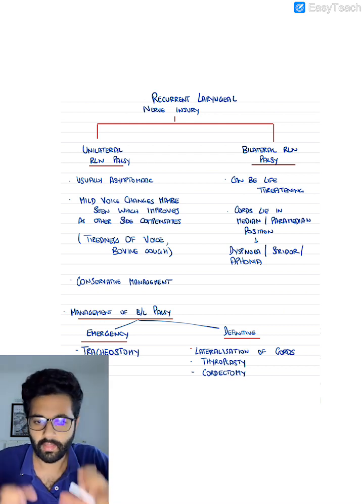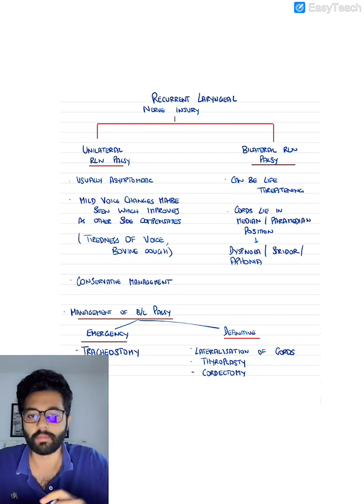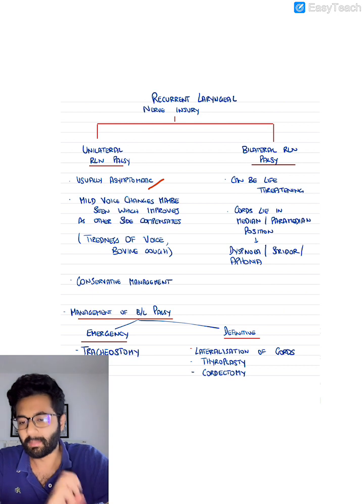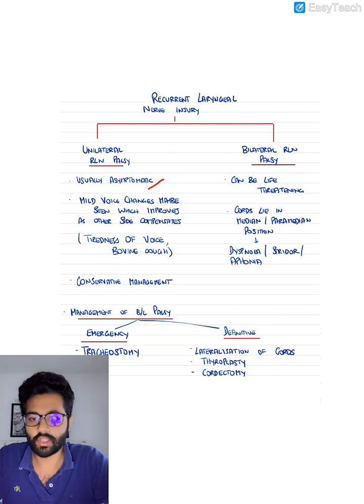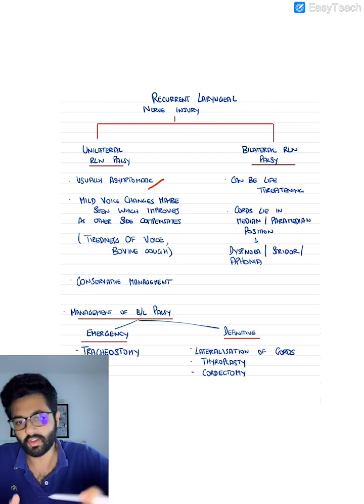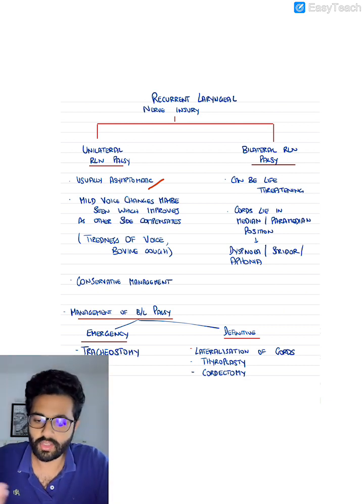So first we'll talk about unilateral, then bilateral and then we'll go through a few images. Firstly, unilateral injury is usually asymptomatic. It may present with mild voice changes which will over time improve. Because there will be overcompensation from the other functioning side, over time the voice changes will improve.